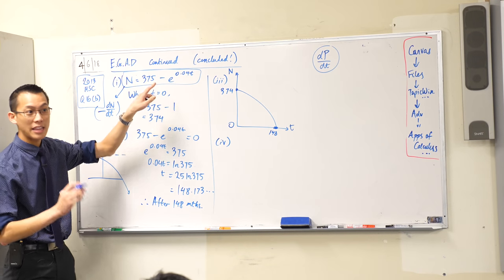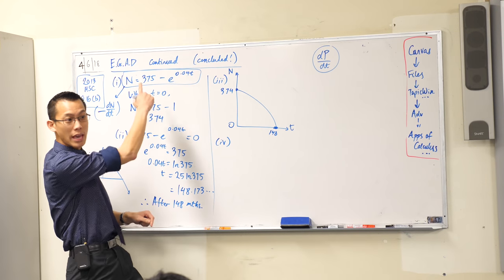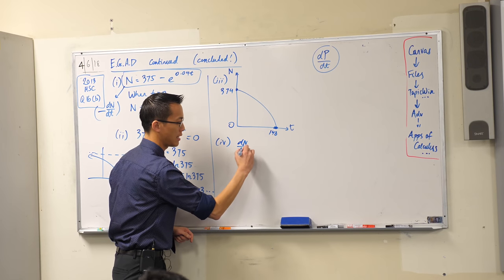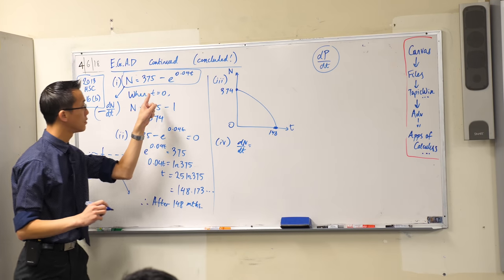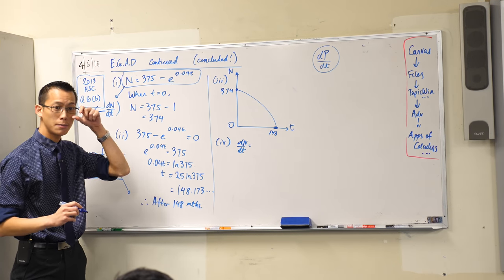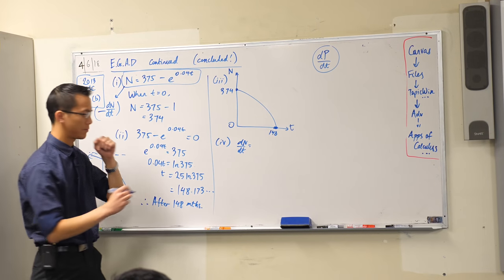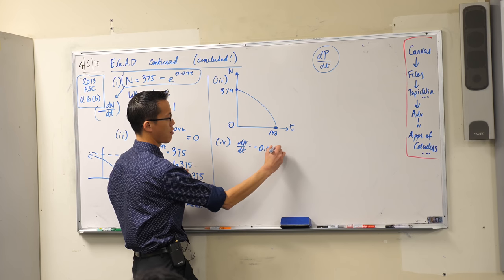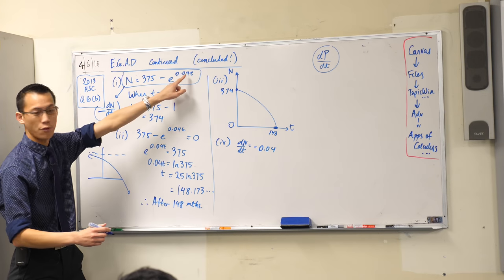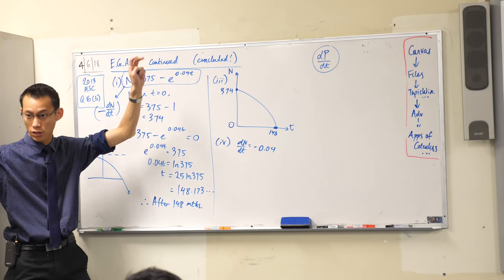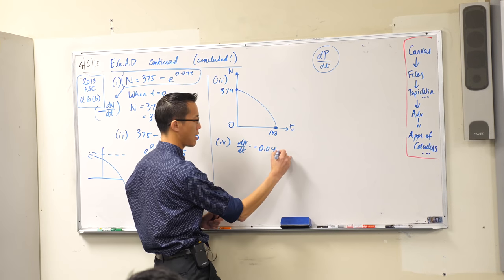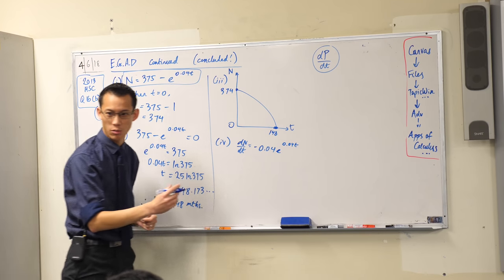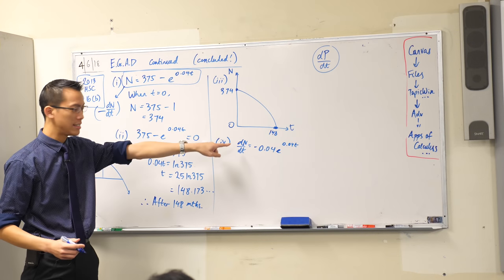Now, dn/dt we can work out quite easily because we have n. Can you help me work out what dn/dt is? There it is: negative 0.04 — that's come from the inside function of the chain rule — and then e to the blah blah, that's all still the same. There's dn/dt.